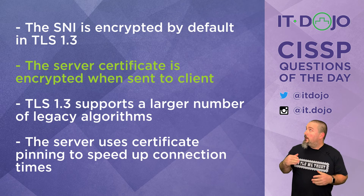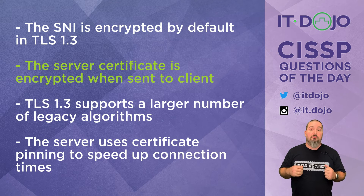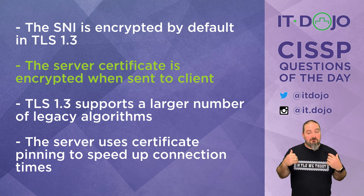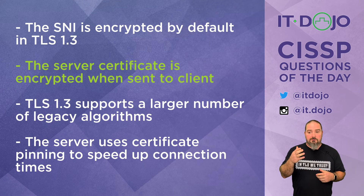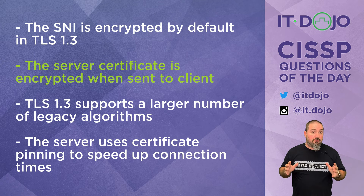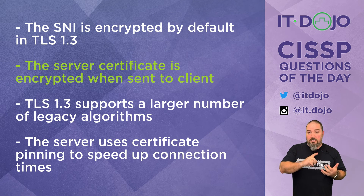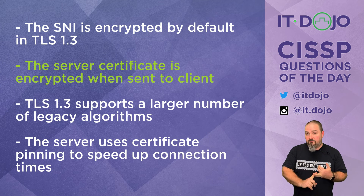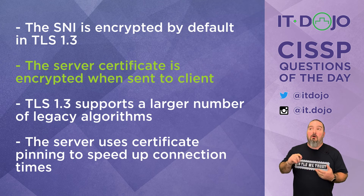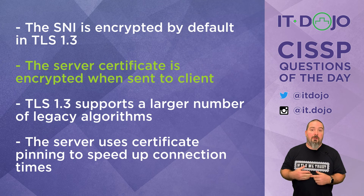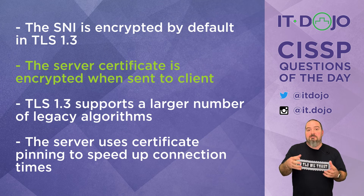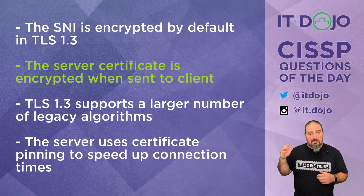Answer choice number three says TLS 1.3 adds support for a whole bunch of legacy algorithms — it's exactly the opposite. TLS 1.3 kicks a whole bunch of legacy algorithms to the curb: things like MD5, SHA-1, RC4, Triple DES, some Diffie-Hellman groups. Keeping those around reduces security and makes you potentially vulnerable to attacks like LOGJAM or FREAK. By removing them, TLS 1.3 gives you fewer choices, but they're better choices.